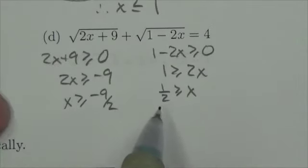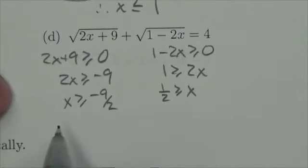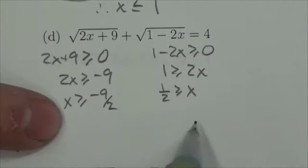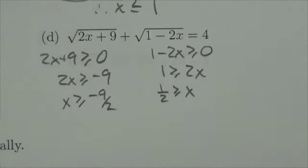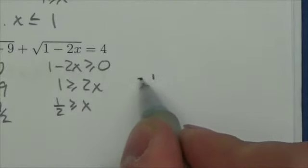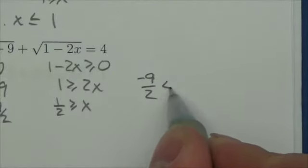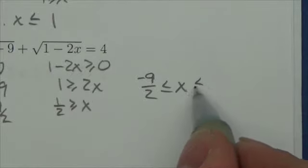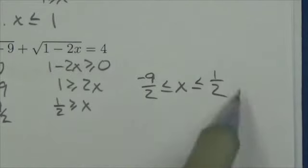Now putting those two together, these are actually working towards each other. I've got the negative 9 halves here, and I've got the one half here. So this really works if x is greater than negative 9 halves, but at the same time less than a half. So in that interval right there is the one that we're looking for.